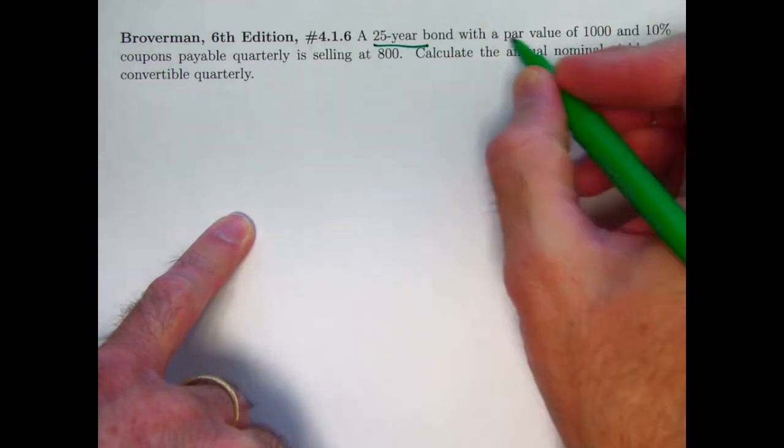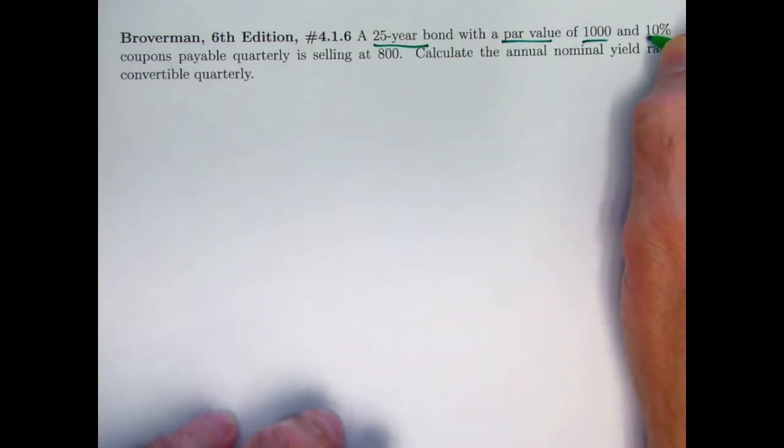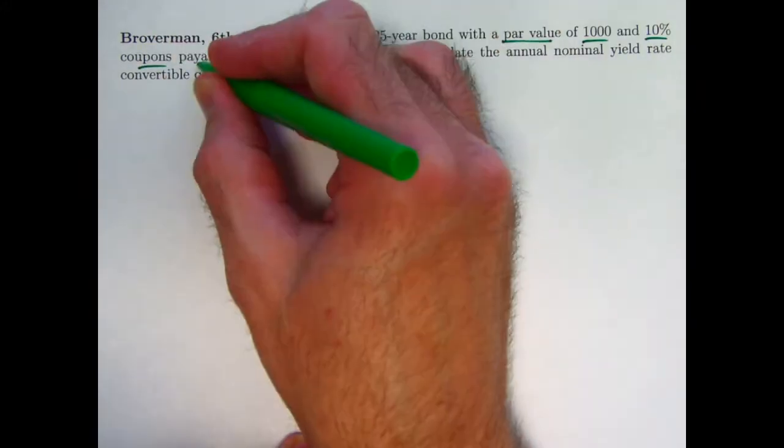We've got a 25-year bond with a par value of 1,000. It has 10% coupons payable quarterly